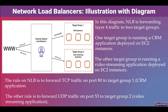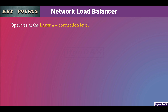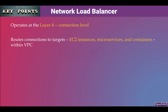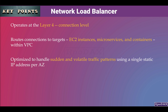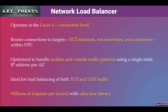Now let's go through the key points of the Network Load Balancer. The Network Load Balancer operates at Layer 4, which is the connection level. Based on IP protocol data, it routes connections to targets — EC2 instances, microservices, and containers — within a VPC. It is optimized to handle sudden and volatile traffic patterns using a single static IP address per AZ. The NLB is ideal for load balancing both TCP and UDP traffic, is capable of handling millions of requests per second, and can maintain ultra-low latency. This is one of the key features of Network Load Balancers.